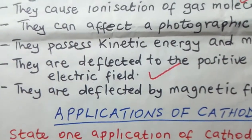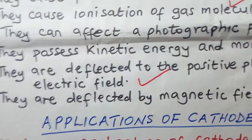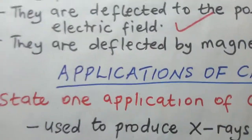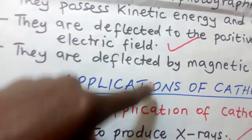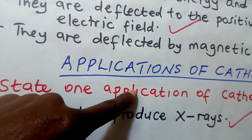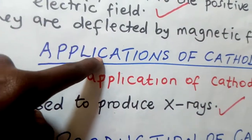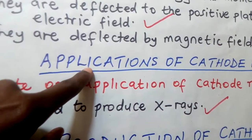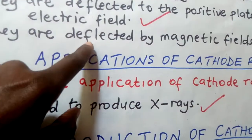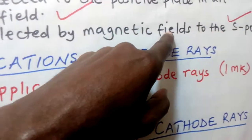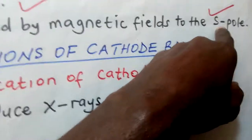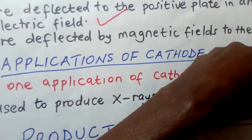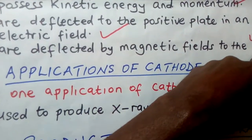What about if you bring a magnetic field? A magnetic field means you bring a south pole and a north pole. Supposing we have here a north pole and here a south pole, then you allow these cathode rays to pass in the middle — they will also deflect. We say they are deflected by magnetic fields; they will be deflected towards the south pole. All these are properties of cathode rays, and therefore they are all correct.